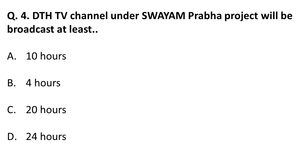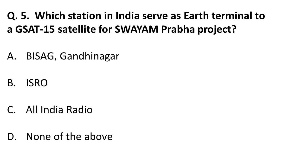The next question: DTH TV channels under the Swayam Prabha project will be broadcasting for at least how many hours? The minimum number of hours these channels should broadcast is four hours. Remember, the minimum amount is four hours.